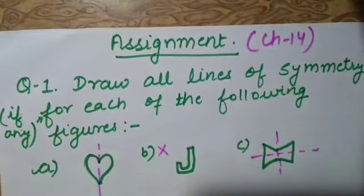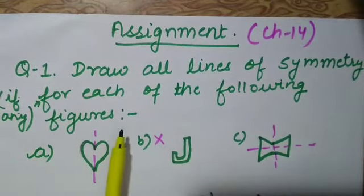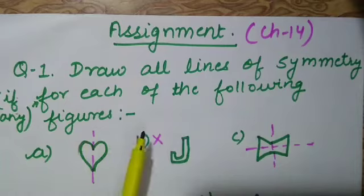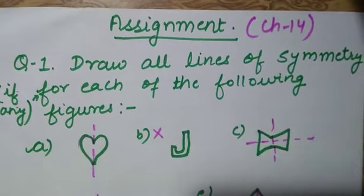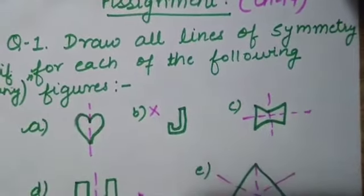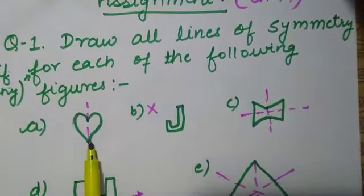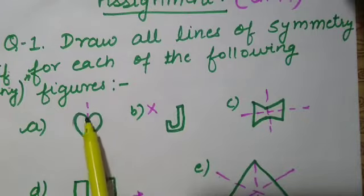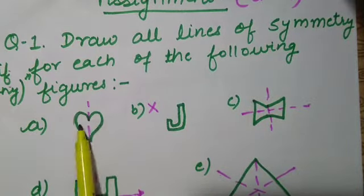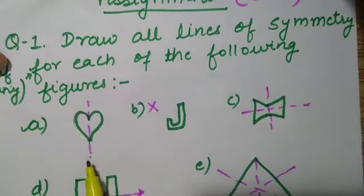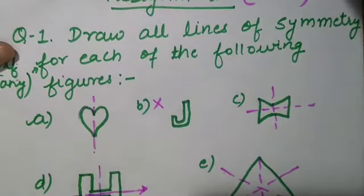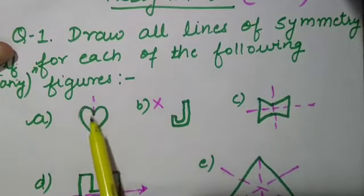Question number 1: we have to draw all lines of symmetry, if any, for each of the following figures. We have been given 10 parts. Starting with part A — when this figure is folded along this vertical line, the parts of this figure will completely overlap. So this line acts as a line of symmetry, and it has only one line of symmetry, that is the vertical line of symmetry.